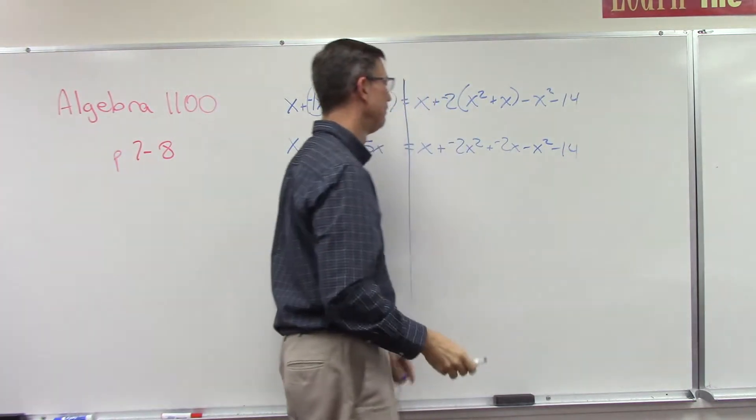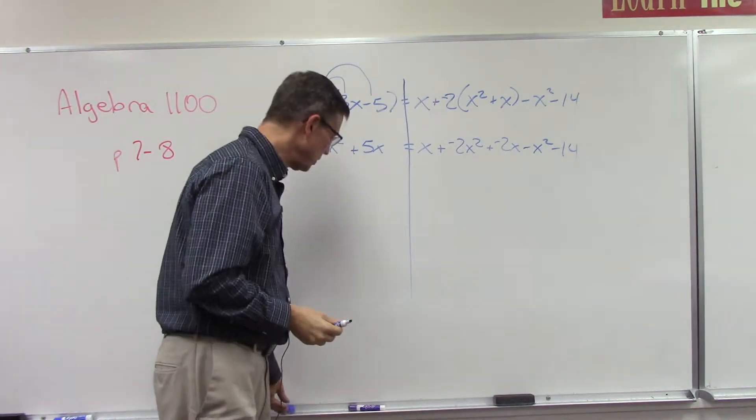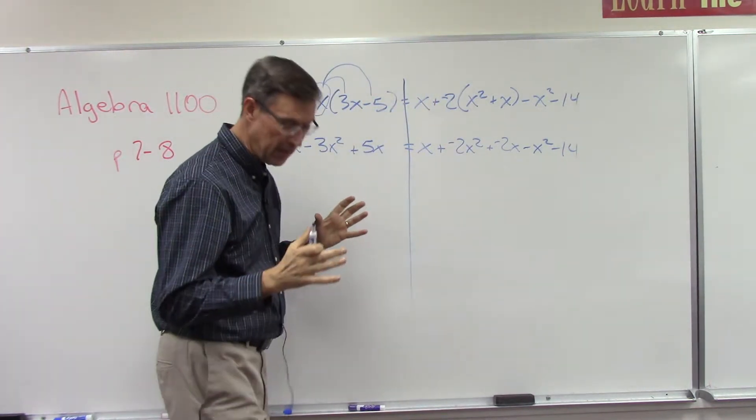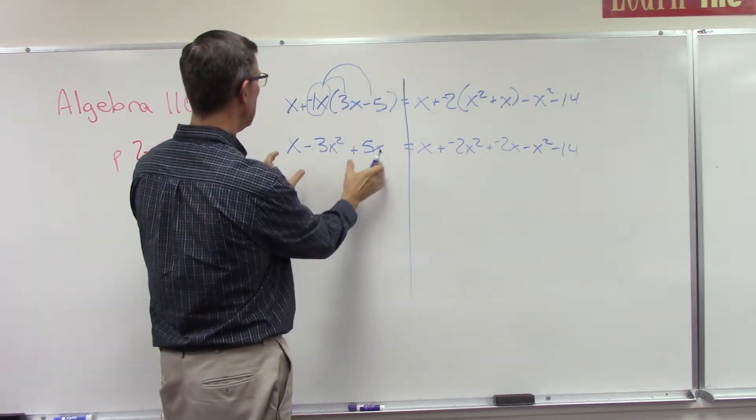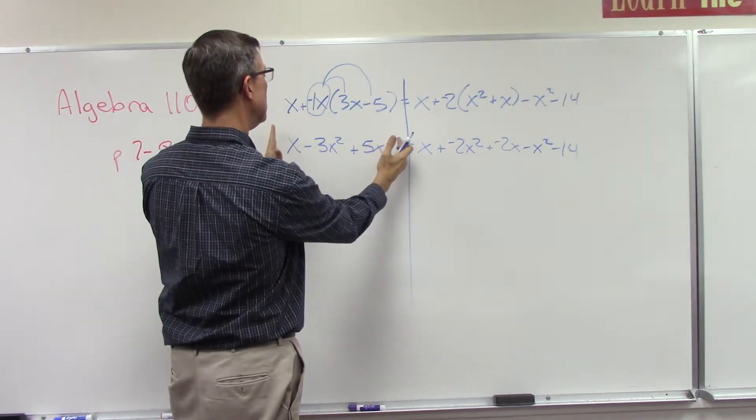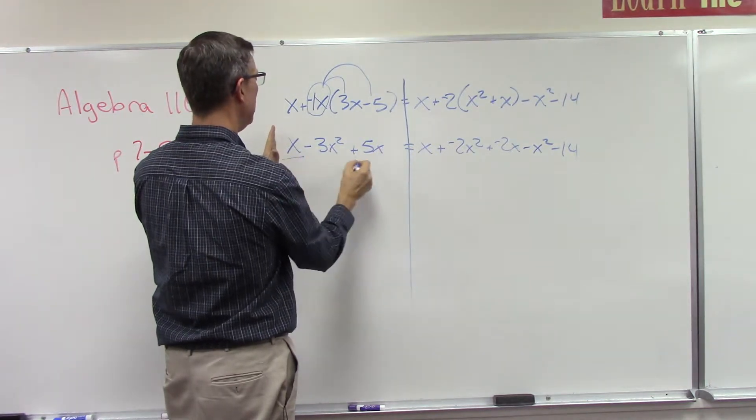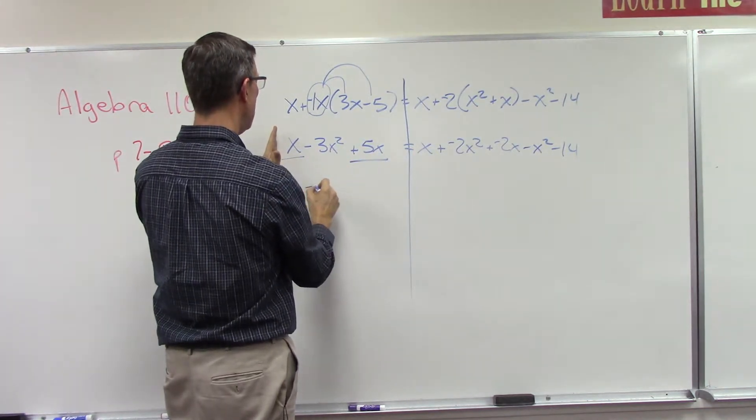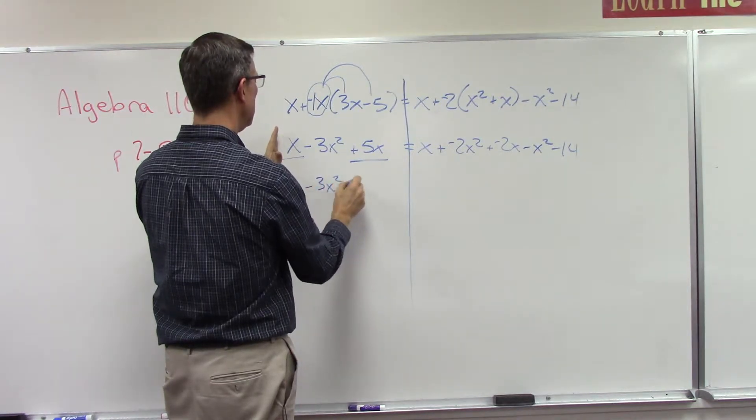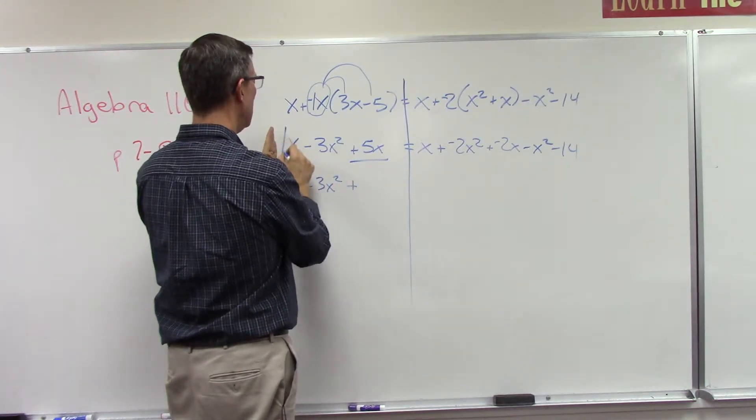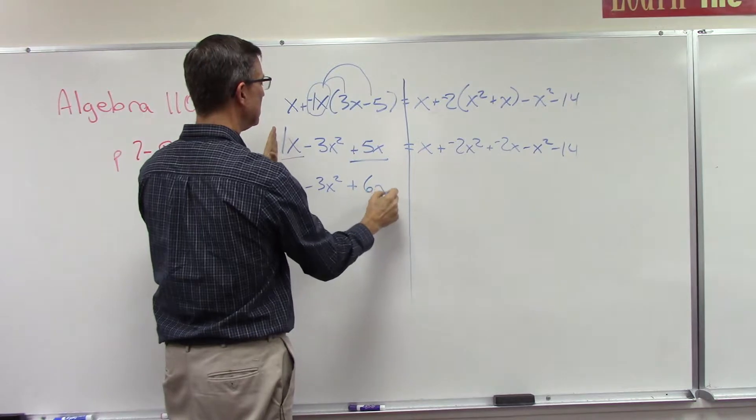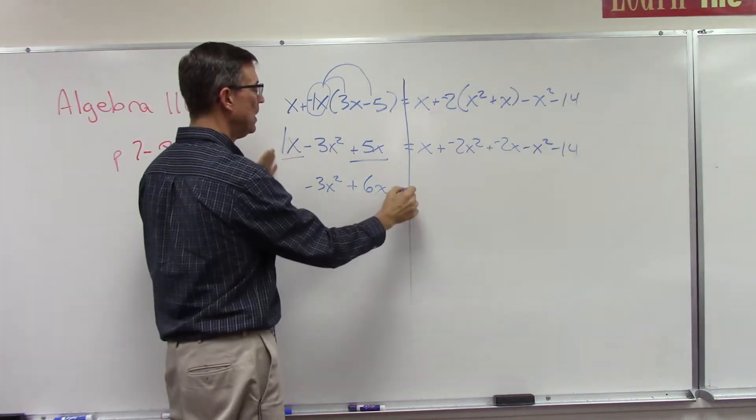Now what I recommend you do is on each side just kind of gather any like terms that you have. So let's just look over here, focus on this. Do we have like terms? Right here, right here, correct. So I have negative 3x squared plus 1 plus 5 is 6x.